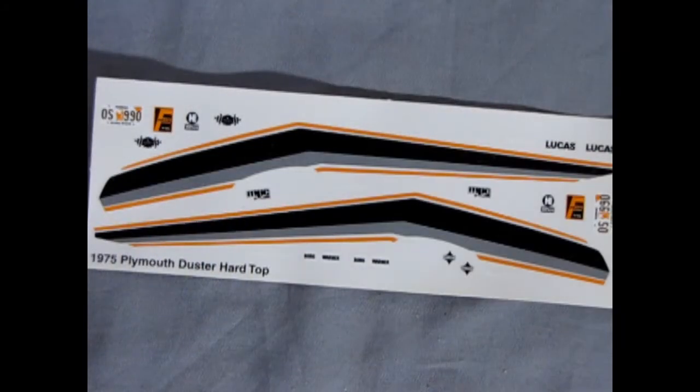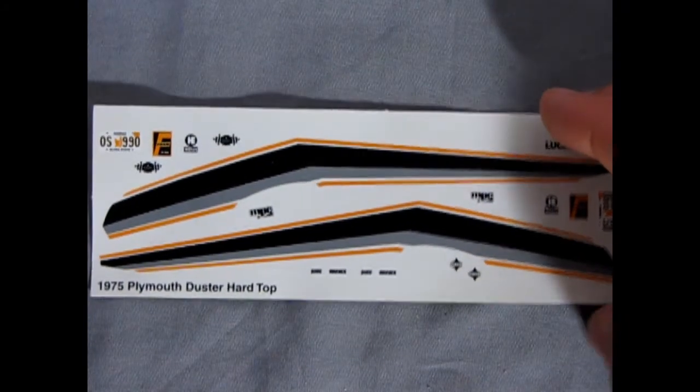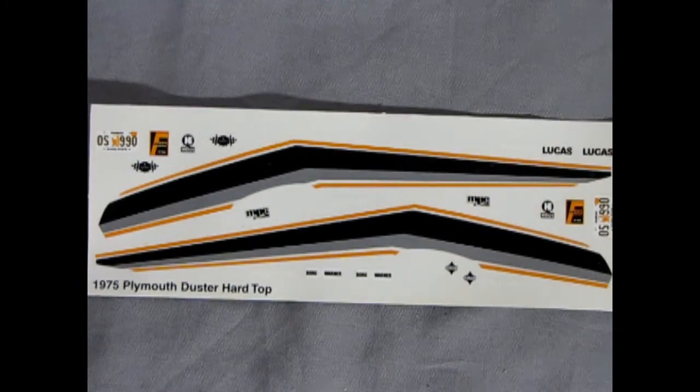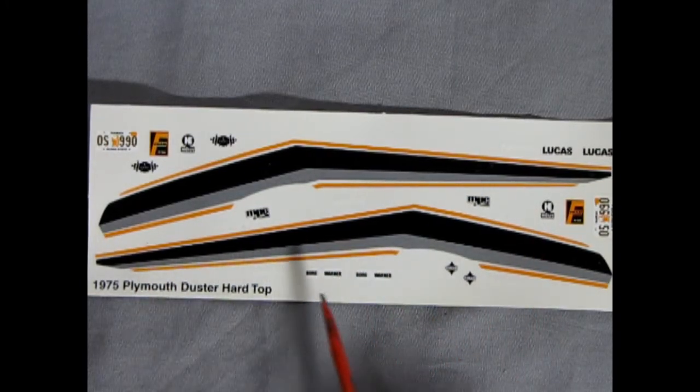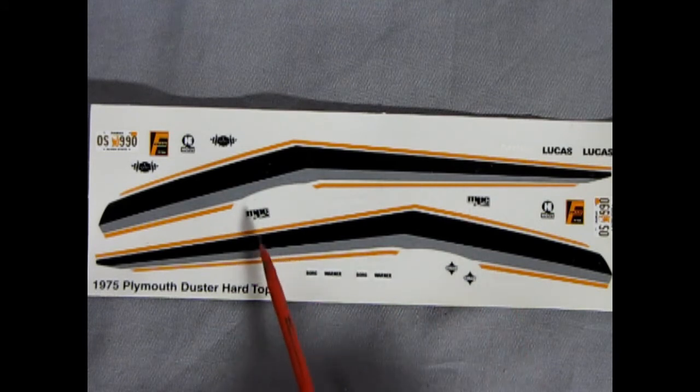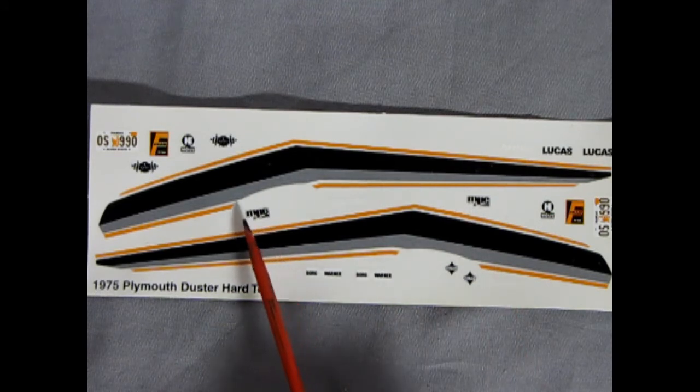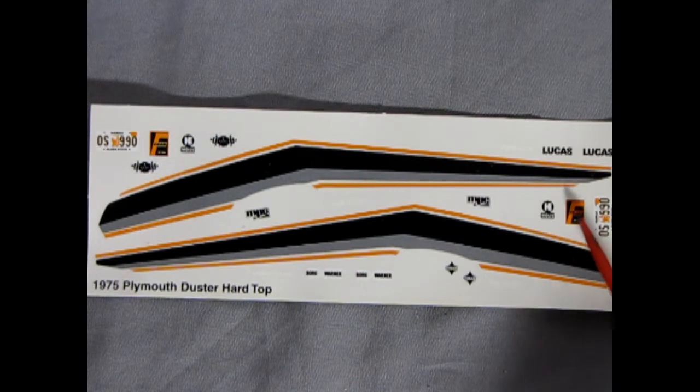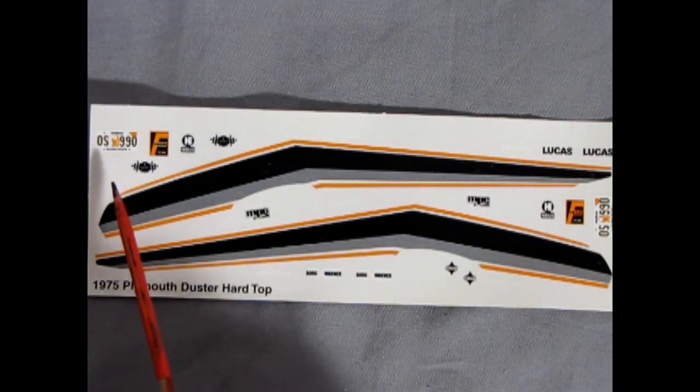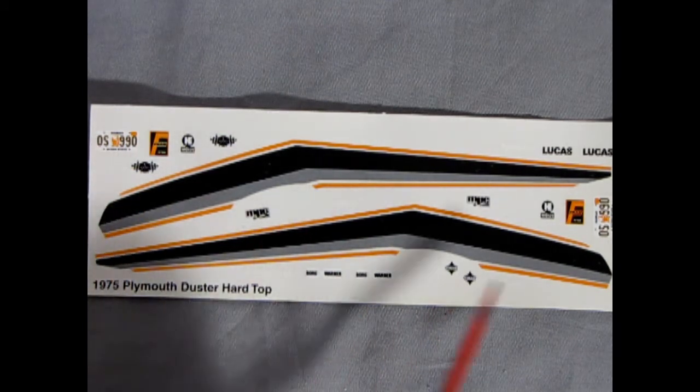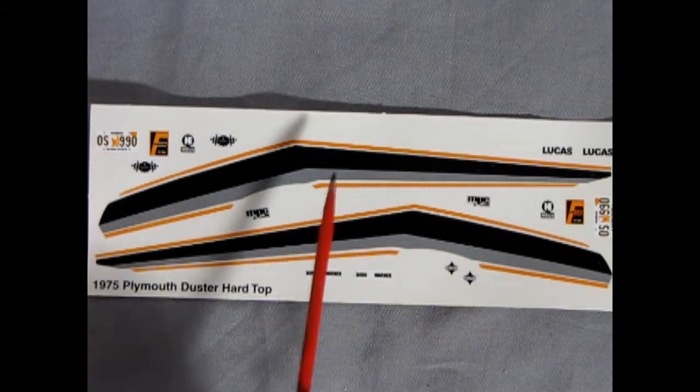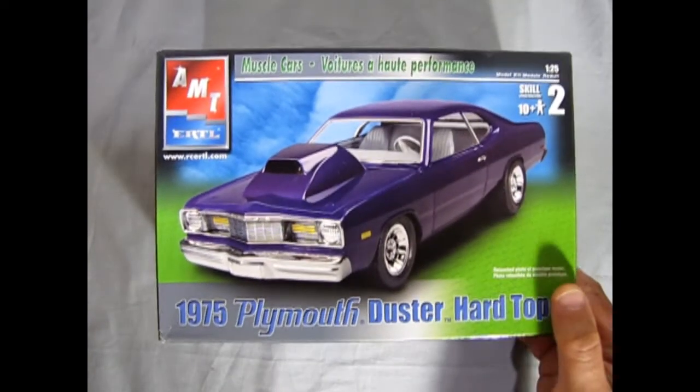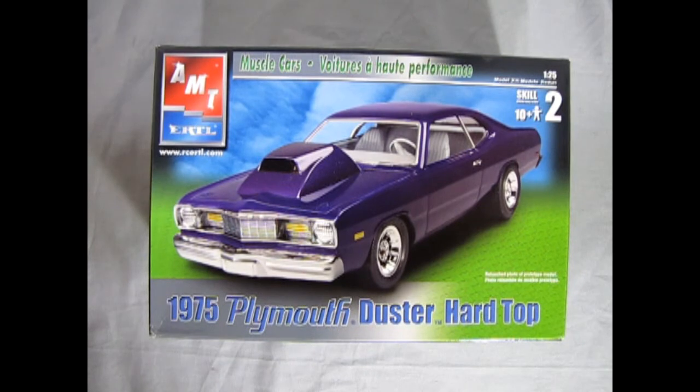Last but not least, we have our decal sheet. And here's the big reveal. And as you can see, we have these nice orange, black and gray stripes. This is what the kit would have come out with in its initial run. Aha! Here we have the MPC logo. So I was correct. We've got the Fram decal as well as the Keystone decal. And here we have Hawaiian license plates, which is quite interesting. You don't see too many from the Aloha State. And that completes our look at the AMT Ertl 1975 Plymouth Duster hardtop.